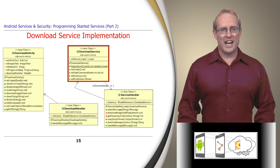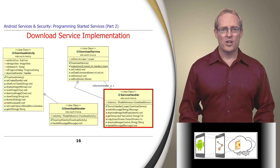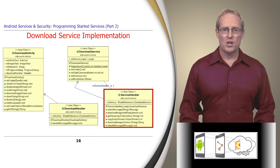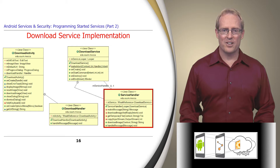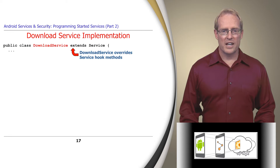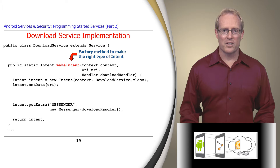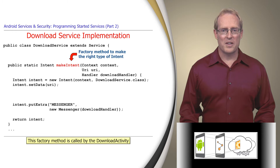We'll now analyze the download service implementation, which contains an instance of ServiceHandler that runs in a background thread and retrieves an image from a remote server, stores it in a file on the device, and returns the path name of the file to the download activity client. DownloadService extends the service superclass and overrides several of its hook methods. It also defines a factory method called MakeIntent that's called by the download activity to make the right type of intent to pass to the StartService method.